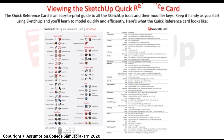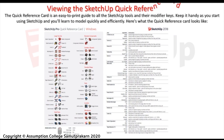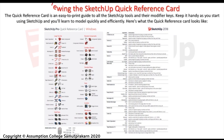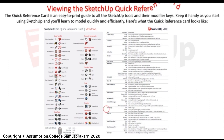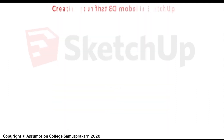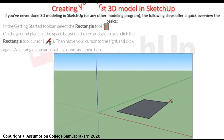Here is the SketchUp quick reference card. The quick reference card is an easy-to-print guide to all the SketchUp tools and their modifier keys. Keep it handy as you start using SketchUp, and you'll learn to model quickly and efficiently. Here's what the quick reference card looks like — you can search for it in Google.